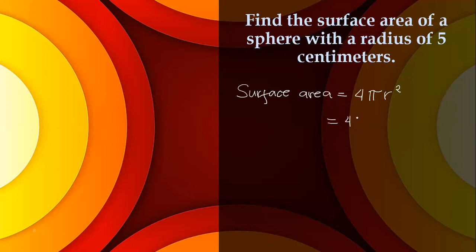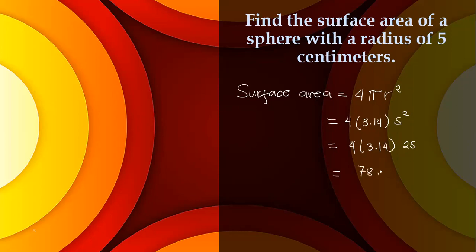Four times pi — 3.14 — times the radius squared. The radius is five, so five squared. Four times 3.14, and five squared is equal to 25. Five times five is equal to 25, and then 25 times 3.14 is equal to 78.5, times four is equal to 314 centimeters squared. Thank you for watching.